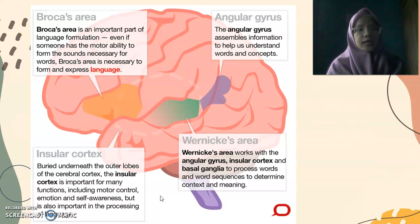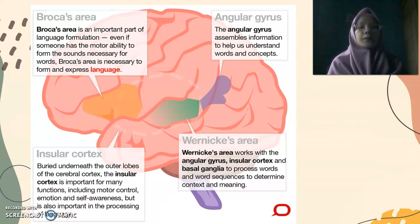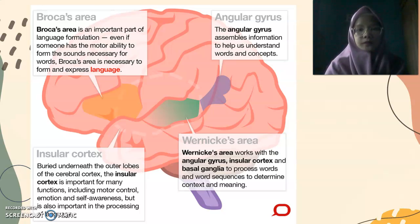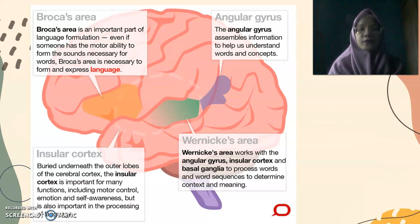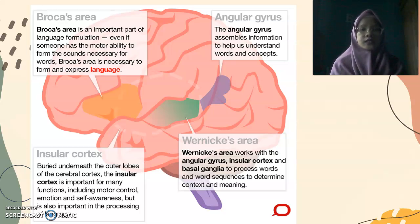The insular cortex is important for many functions including motor control, emotion, and self-awareness, but it is also important in the process of language. The last one is the angular gyrus — the angular gyrus assembles information to help us understand words and concepts. So those are the four parts of the brain that participate in the process of language.